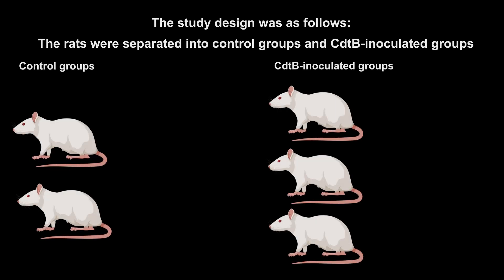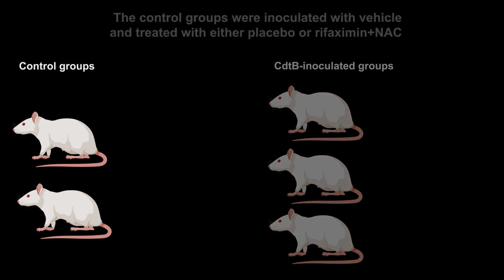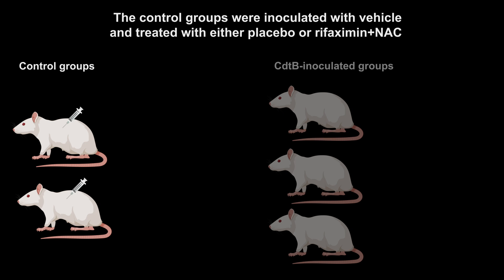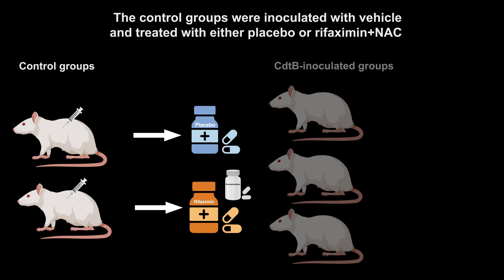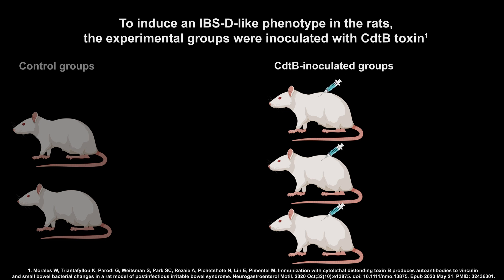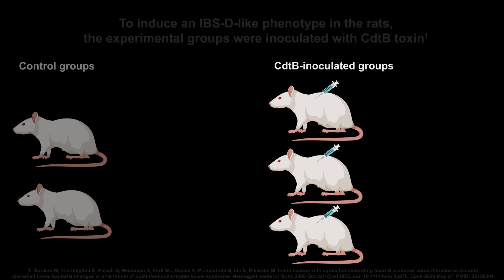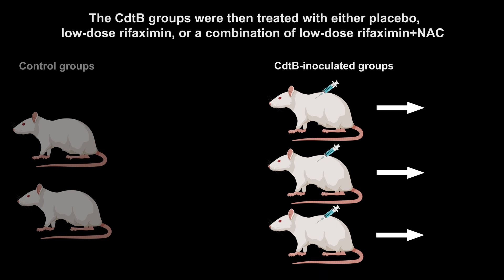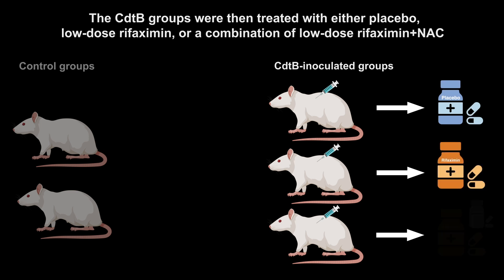The study design was as follows. The rats were separated into control groups and CDTB-inoculated groups. The control groups were inoculated with vehicle and treated with either placebo or Rifaximin plus NAC. To induce an IBS-D-like phenotype, the experimental groups were inoculated with CDTB toxin. The CDTB groups were then treated with either placebo, low-dose Rifaximin, or a combination of low-dose Rifaximin plus NAC.